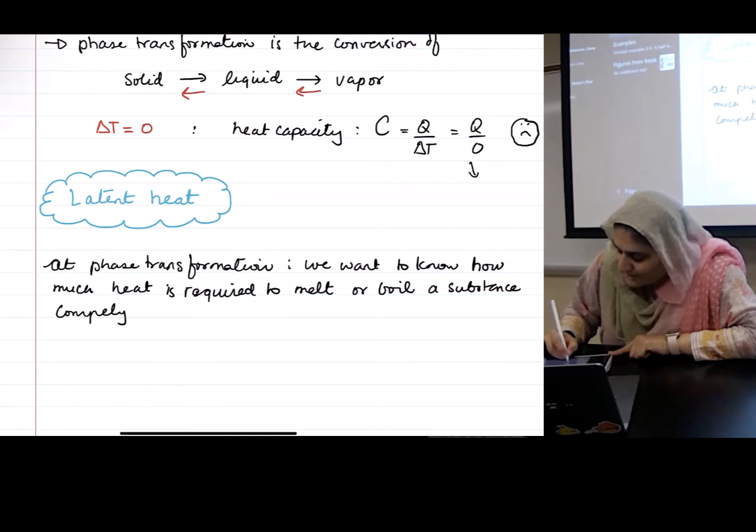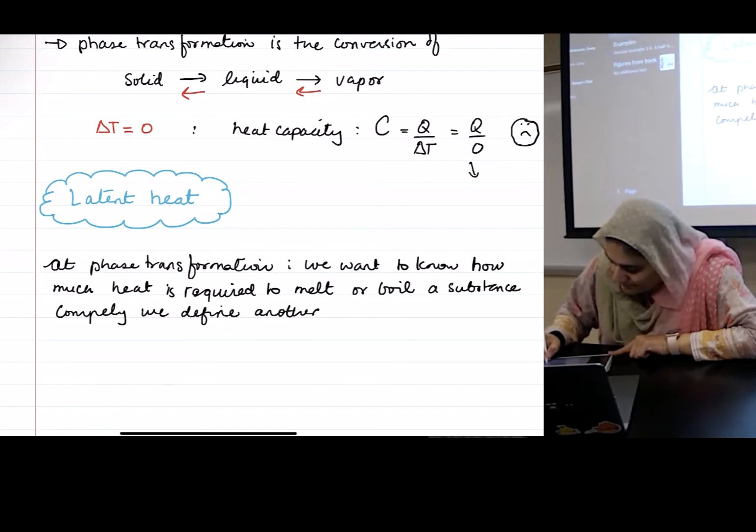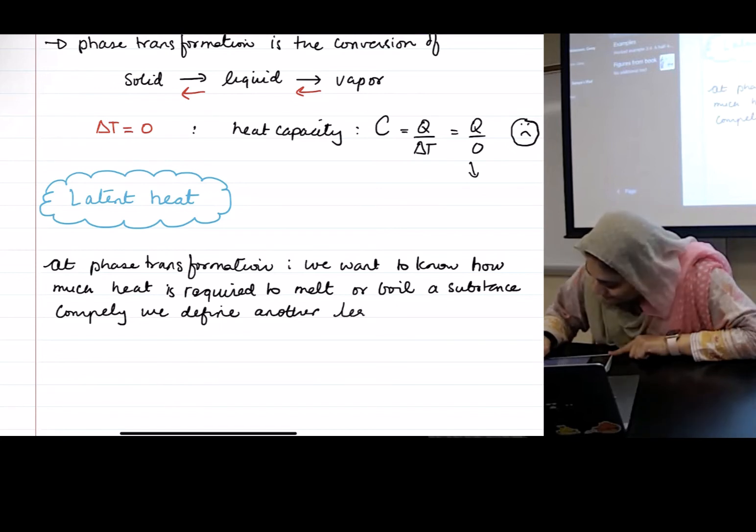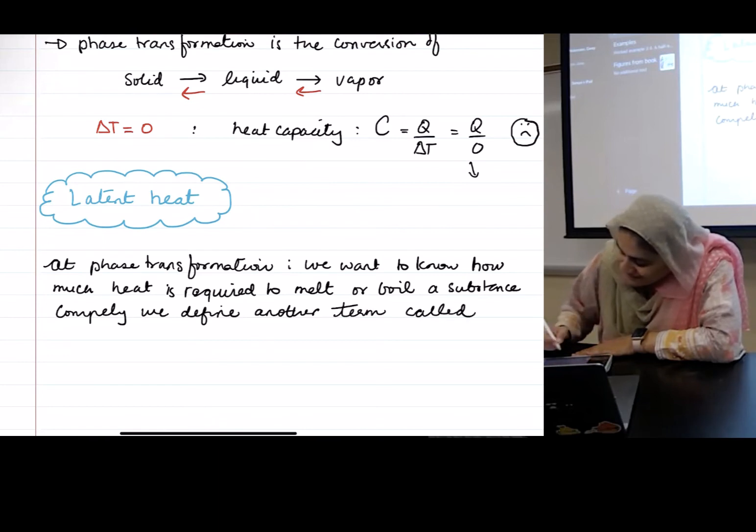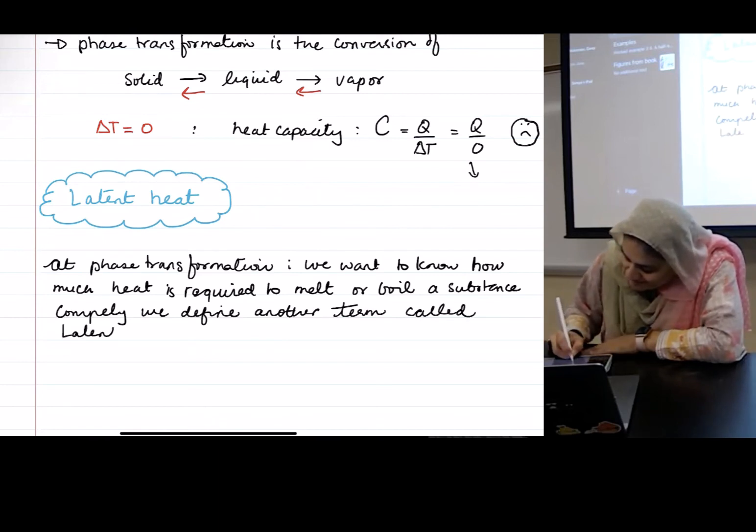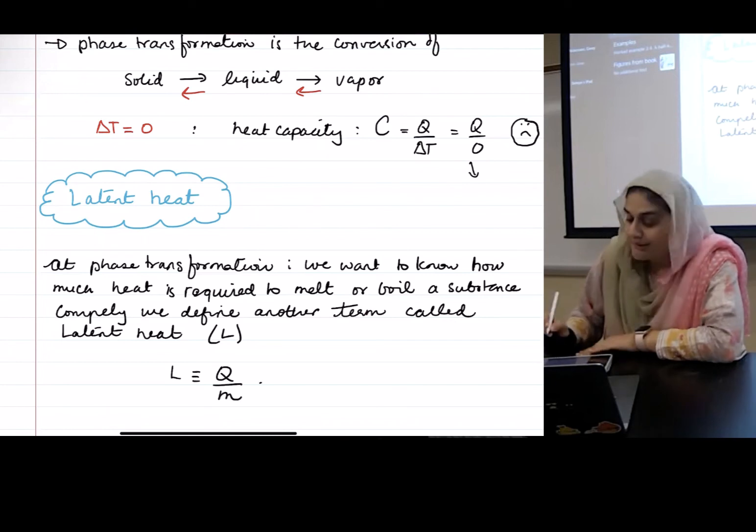We define another term called latent heat, L, given by Q divided by M.